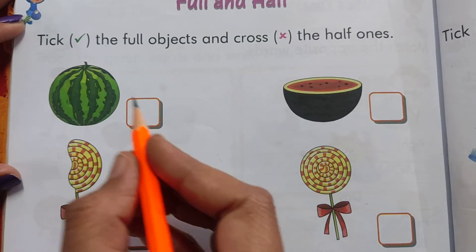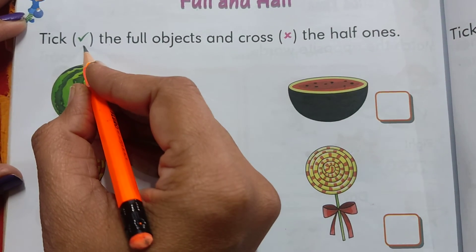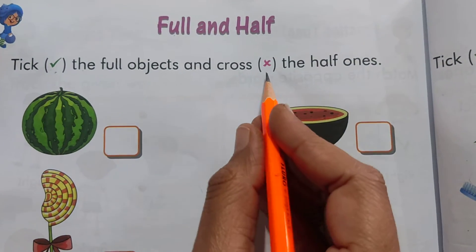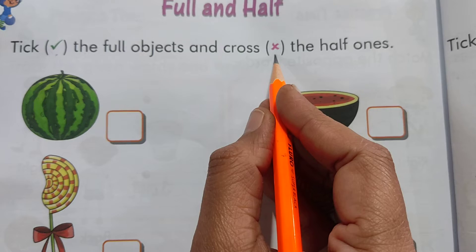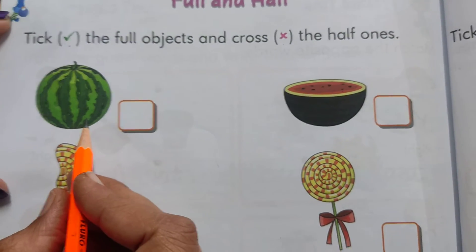Jo objects full hai, pure hai, unpe hume tic karna hai. Aur jo half hai, aada hai, unpe hume kya karna hai? Cross karna hai. Yes. Now, look at this picture.